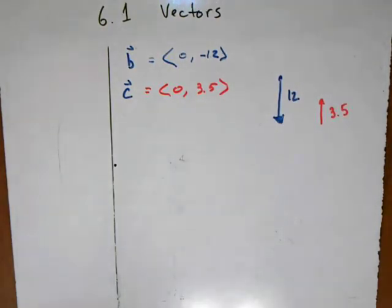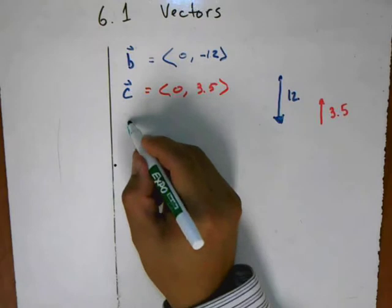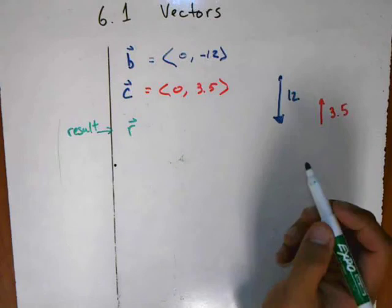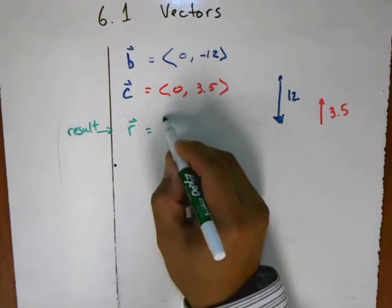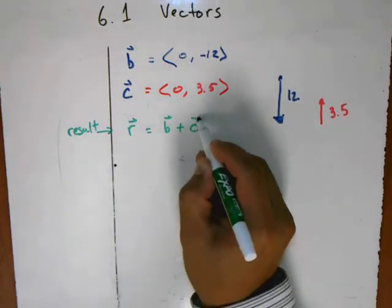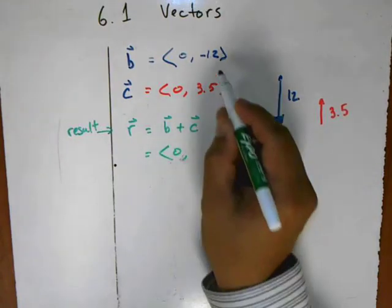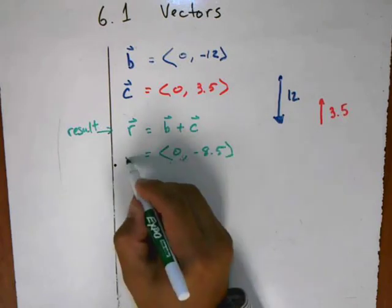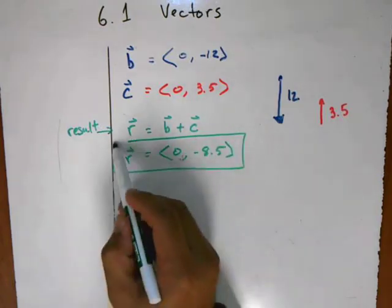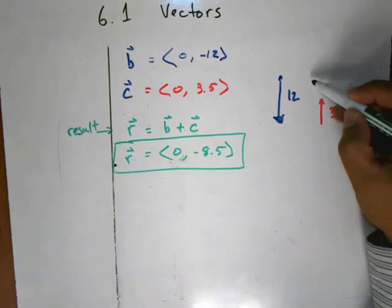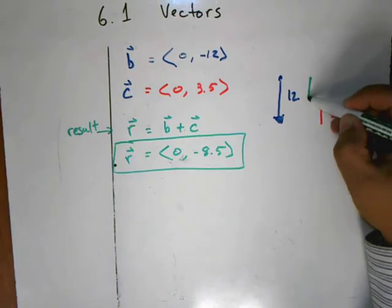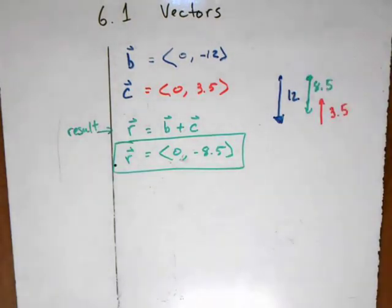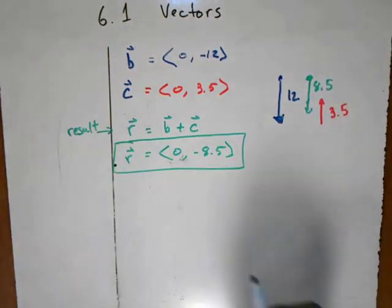What we're interested in is: how fast is the boat actually going? We find the resultant by adding the two vectors. That's b plus c, which gives us (0, -12 + 3.5), which equals (0, -8.5). So that's what r is equal to, and we've answered the question for component form. Instead of going 12, it's now only going down about 8.5. That's the resultant.